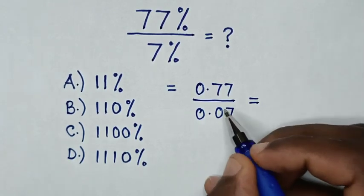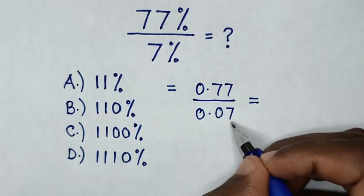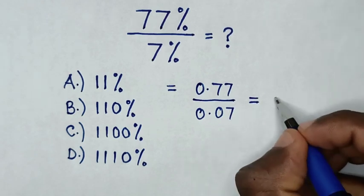Then it will be equal to, because this is in two decimal places same as this, so 77 divided by 7 is 11.